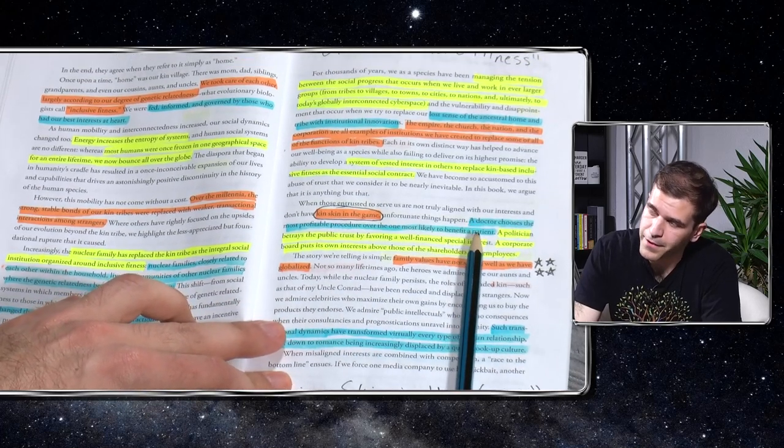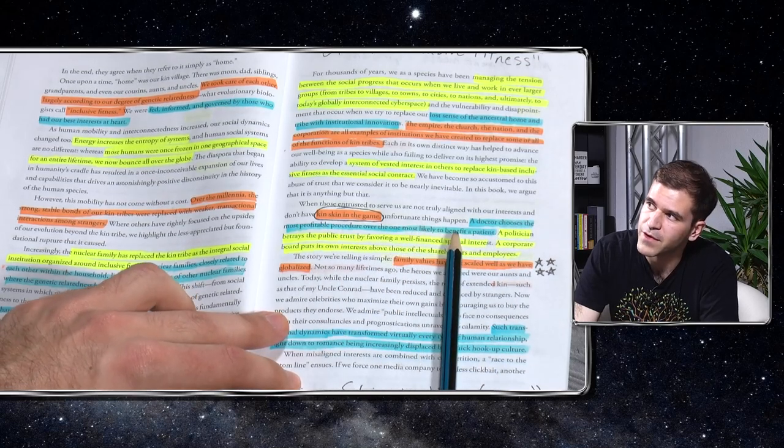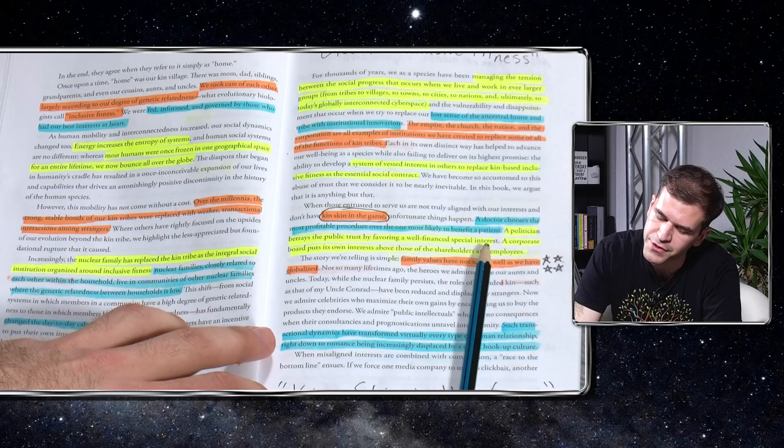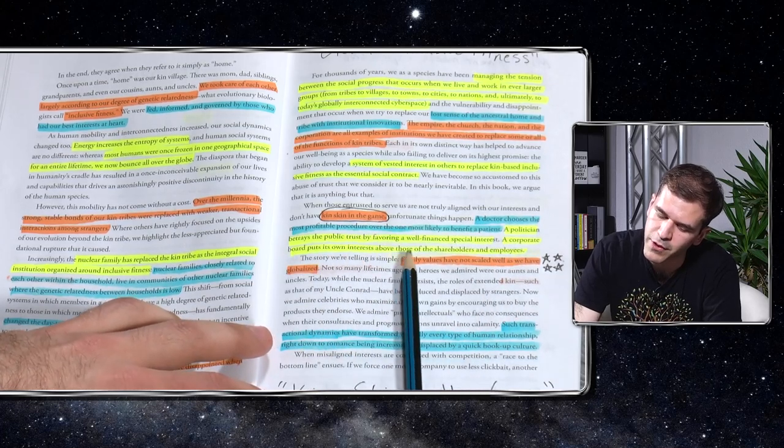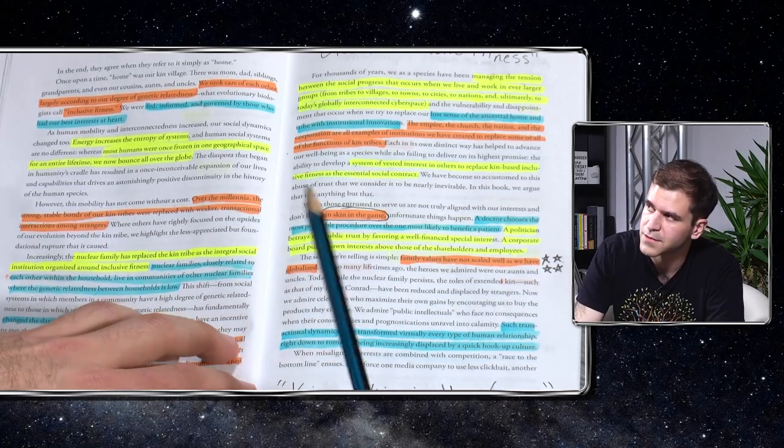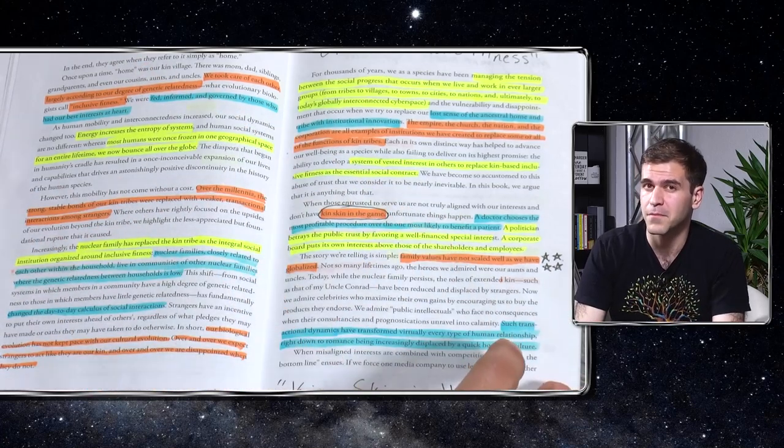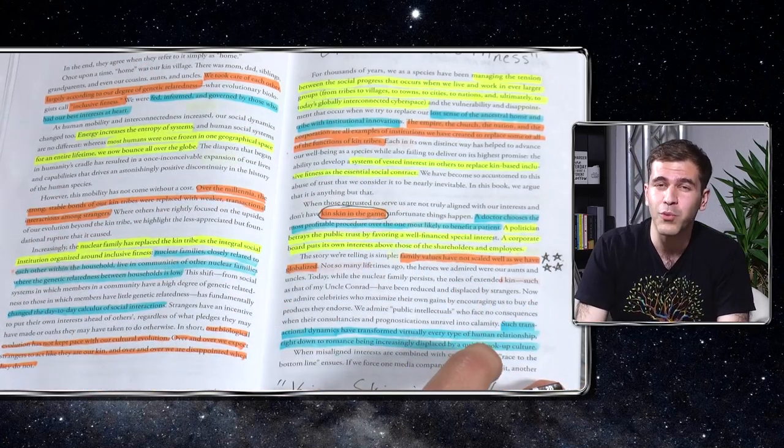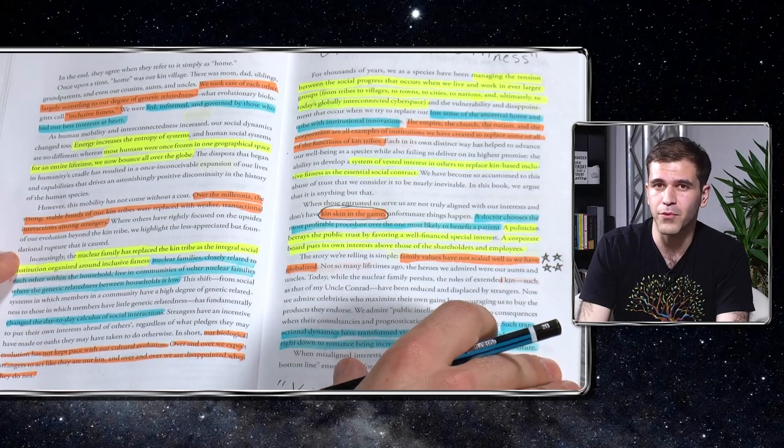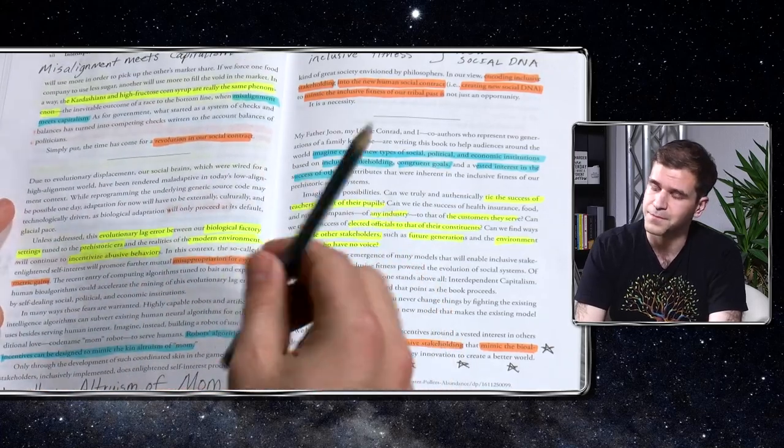These words are really resonant with me. Global inclusive fitness. As a species, we have been managing the tension between the social progress that occurs when we live and work in ever larger groups. From tribes to villages to towns to cities to nations and ultimately to today's globally interconnected cyberspace. Replacing our lost sense of the ancient ancestral home and tribe with institutional innovations. The empire, the church, the nation, and the corporation are all examples of institutions we have created to replace some or all of the functions of kin tribes. A system of vested interest in others to replace kin-based inclusive fitness as the essential social contract. Kin skin in the game.